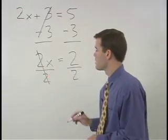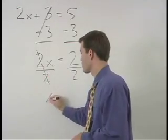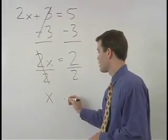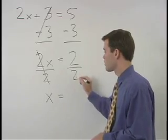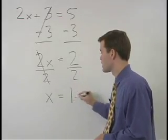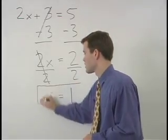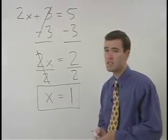On the left, the 2's cancel and we're left with x. On the right, 2 over 2 simplifies to 1. So our answer is x equals 1.